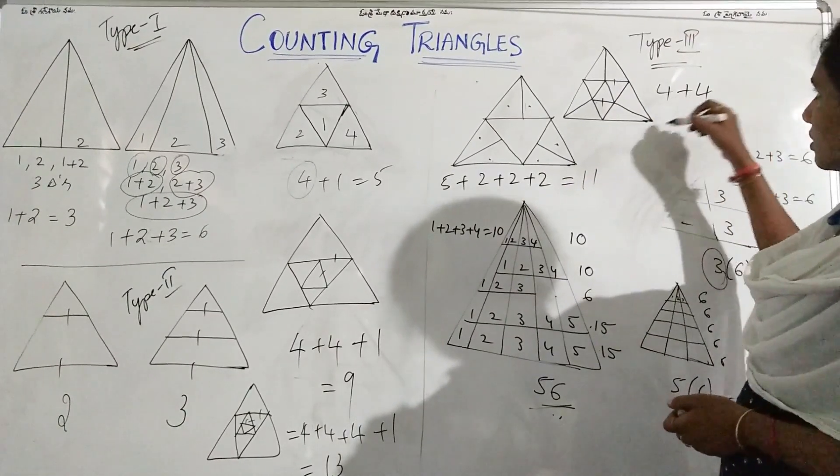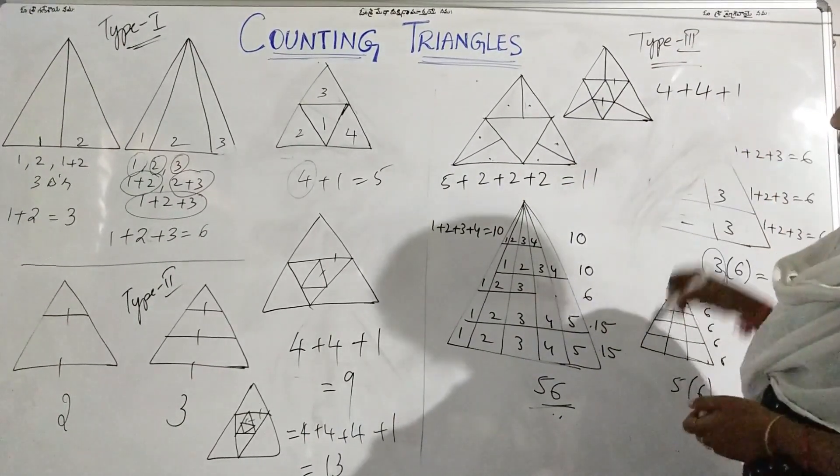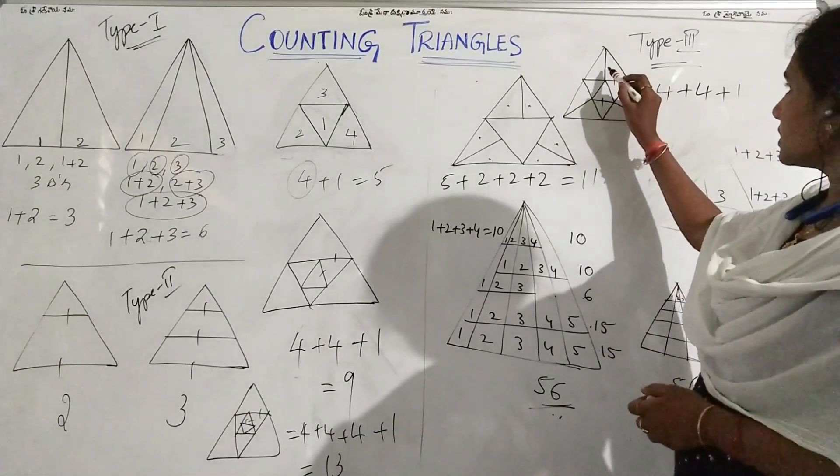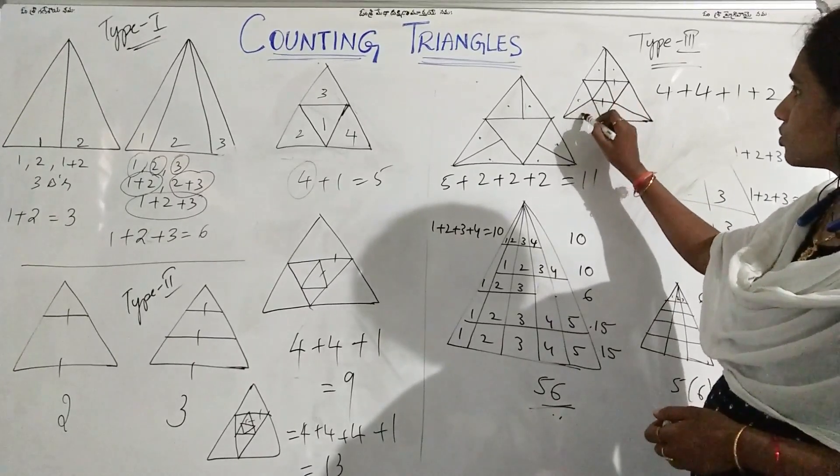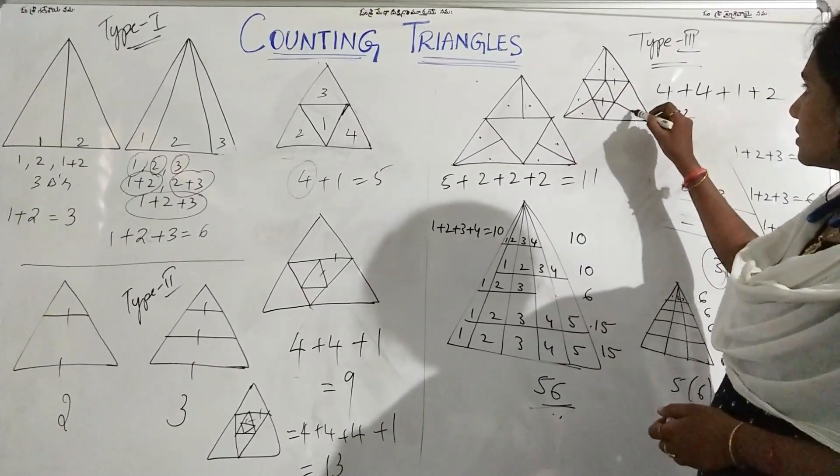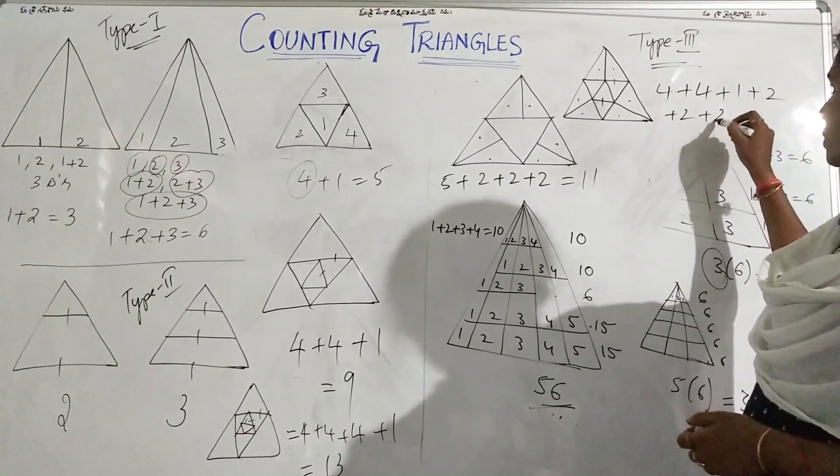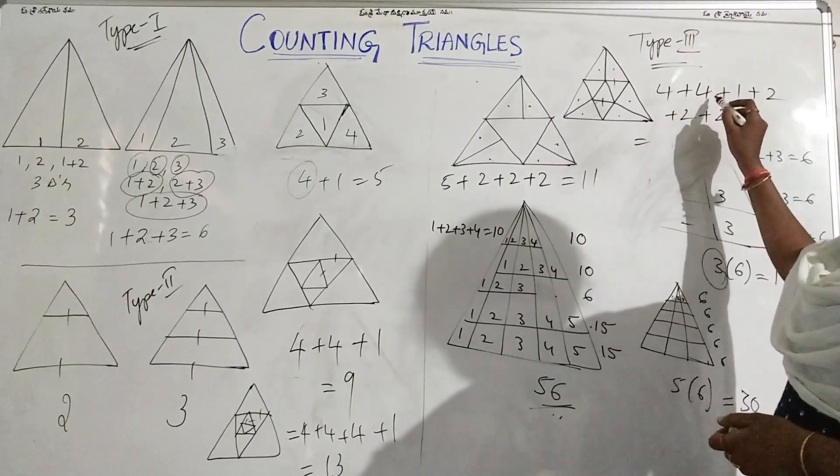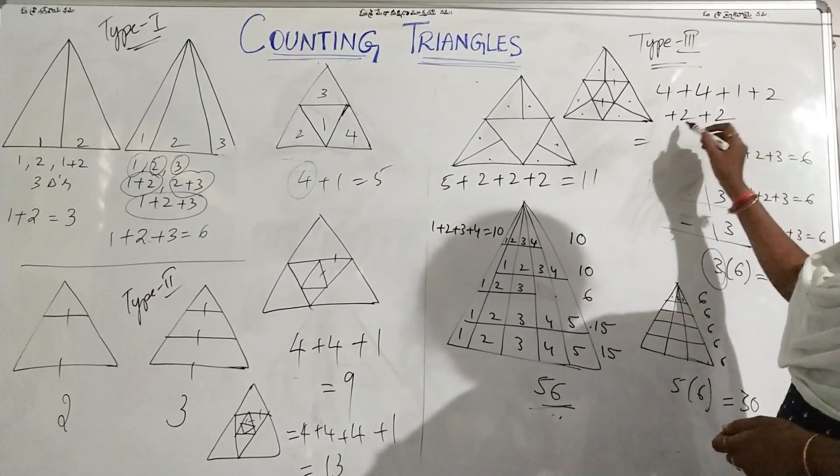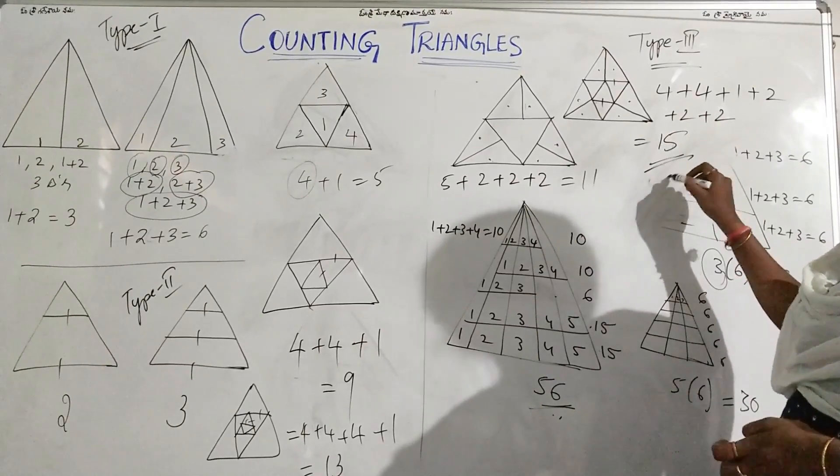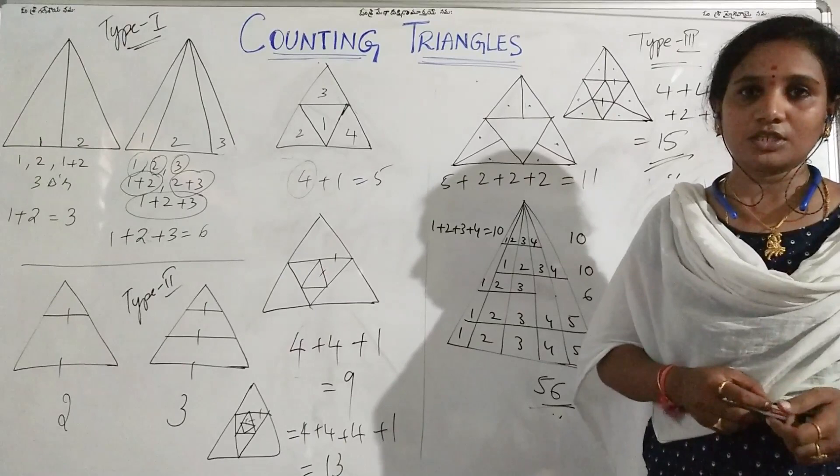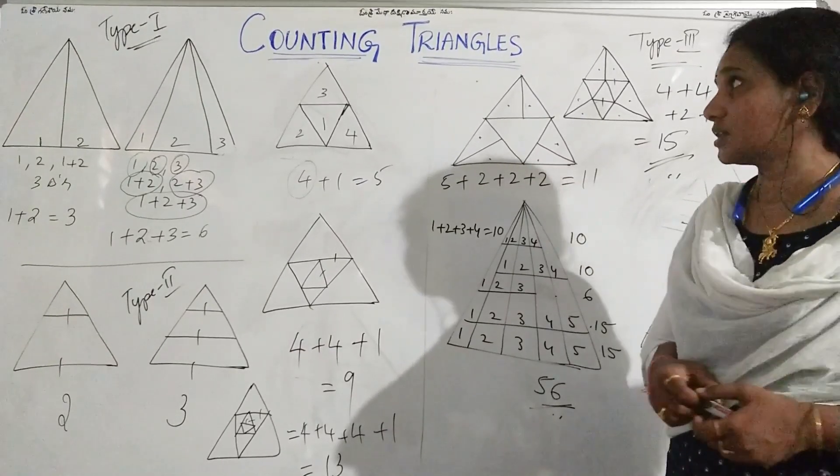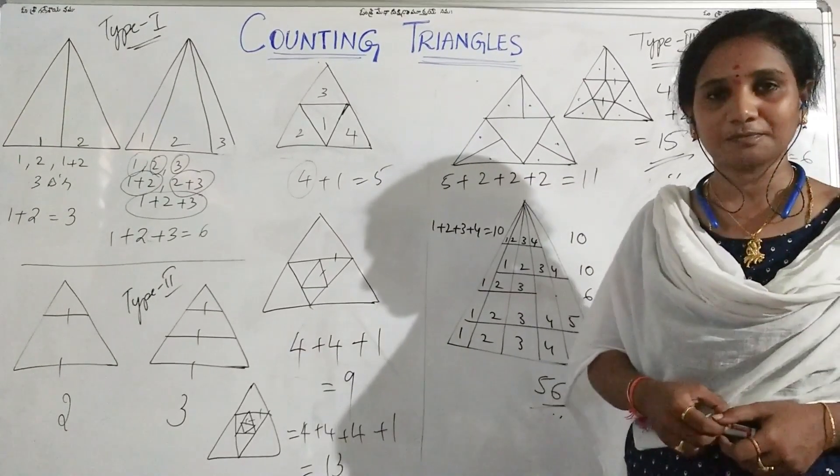And this makes two triangles plus two. And this makes two triangles plus two. So four. So four plus four is eight. Eight plus one is nine plus six, and that is 15 triangles. Hope all of you understood the topic of counting triangles. Thank you.